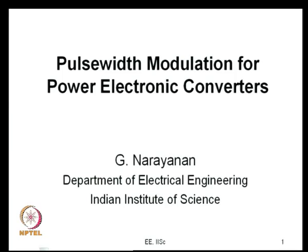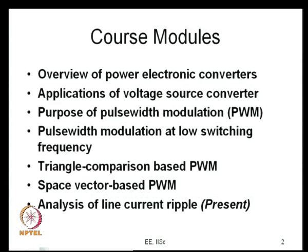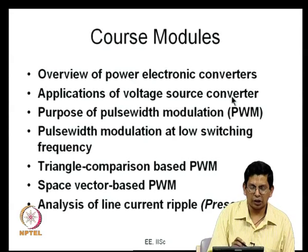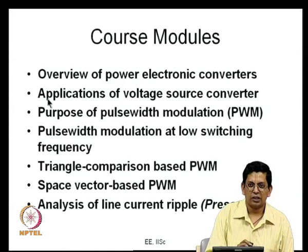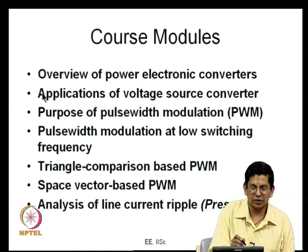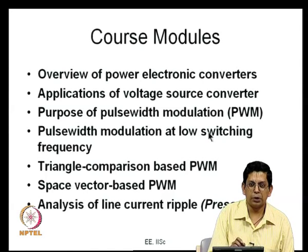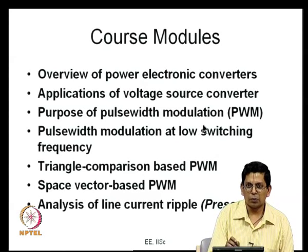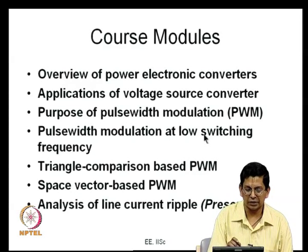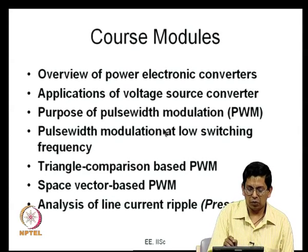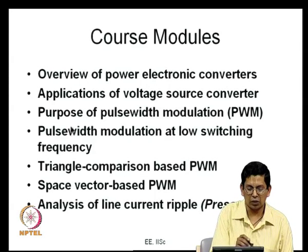Welcome back to this lecture series on pulse width modulation for power electronic converters. We have covered quite a few modules up to this point. We had an overview of various power electronic converters with a particular focus on the voltage source converter, and looked at different applications such as motor drives, active front end rectifiers, active power filters, and so on. After this brief overview we started with the basic purpose of PWM, namely to control the fundamental voltage and mitigate harmonics. We had a review of Fourier series and the effect of different waveform symmetries.